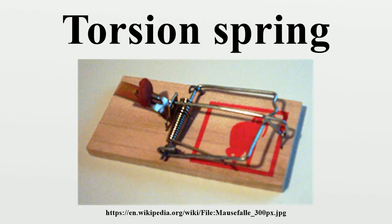The torsion balance, also called torsion pendulum, is a scientific apparatus for measuring very weak forces. Usually credited to Charles Augustin de Coulomb, who invented it in 1777, but independently invented by John Mitchell sometime before 1783, its most well-known uses were by Coulomb to measure the electrostatic force between charges to establish Coulomb's law, and by Henri Cavendish in 1798 in the Cavendish experiment to measure the gravitational force between two masses to calculate the density of the Earth, leading later to a value for the gravitational constant. The torsion balance consists of a bar suspended from its middle by a thin fiber, which acts as a very weak torsion spring.